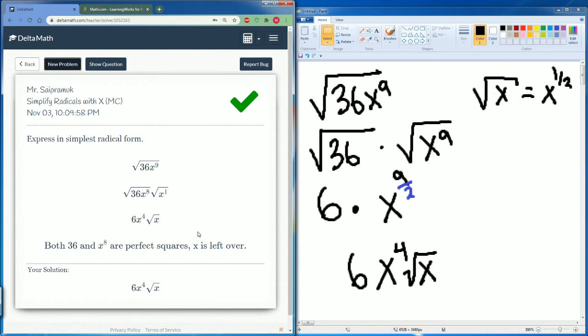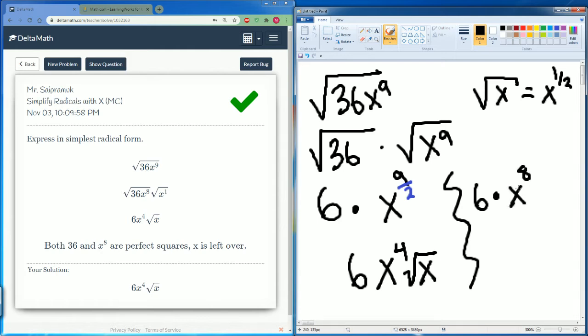Another way you can think about it is this: at this step it would be 6 times, here you can split this apart. So what they did is they split this to an x to the 8 and x to the 1 before they did the radical. So they did x to the 8 divided by 2 times radical x. That's another way of doing it.